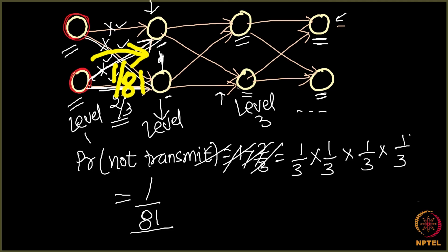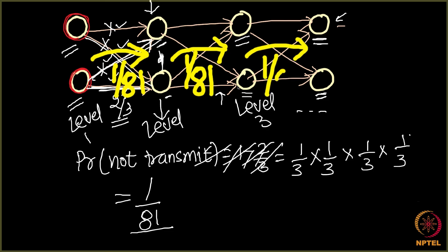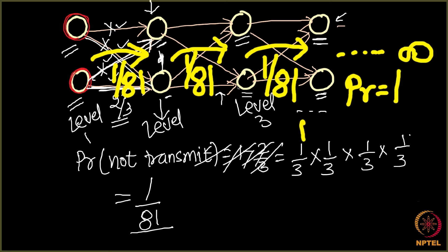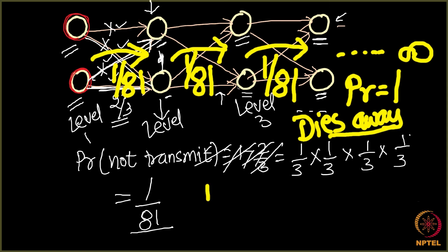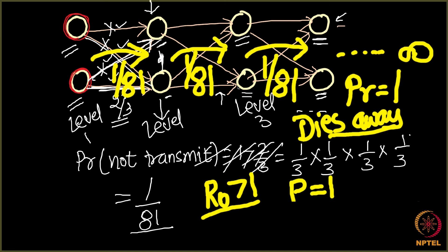This 1/81 is actually on the higher side — there is a significant probability that infection dies at each level. From level 2 to level 3, the disease again dies away with probability 1/81, and again from level 3 to level 4. Since it is an infinite network, with probability equal to one the disease dies away entirely — even though the basic reproductive number was greater than one, which is counterintuitive.